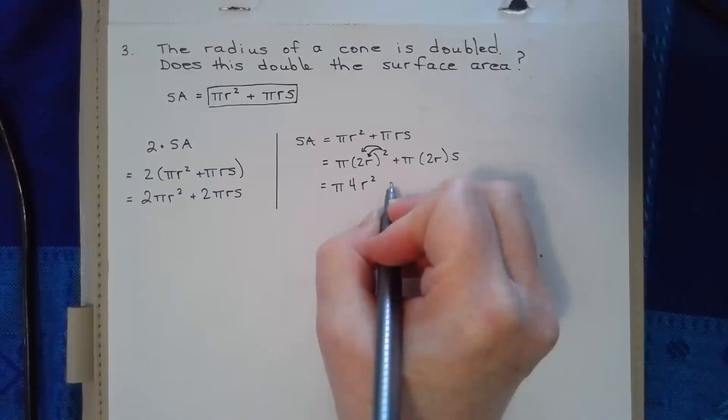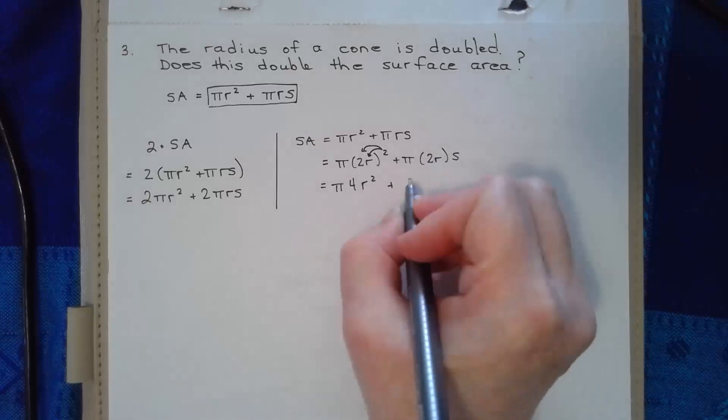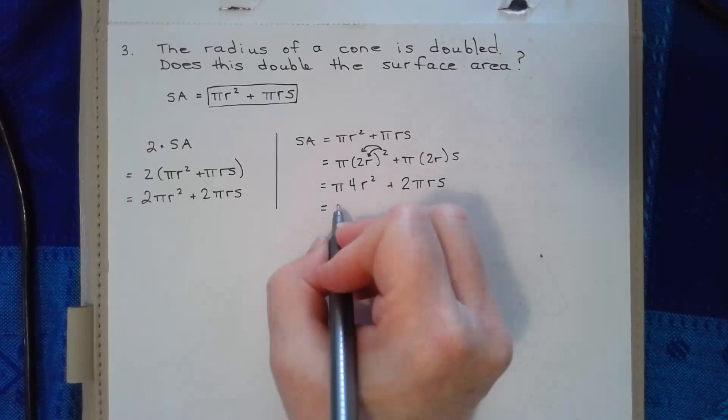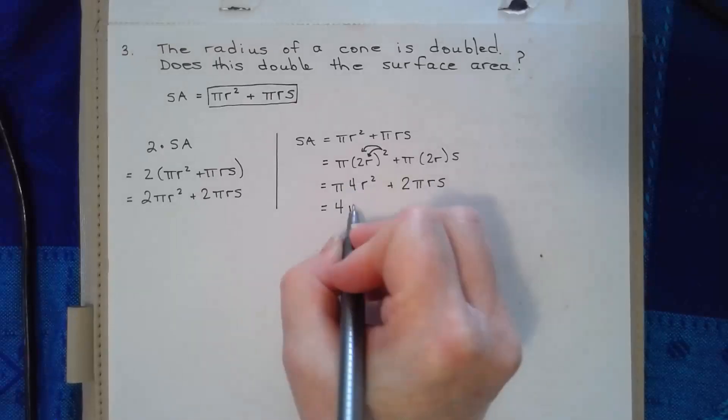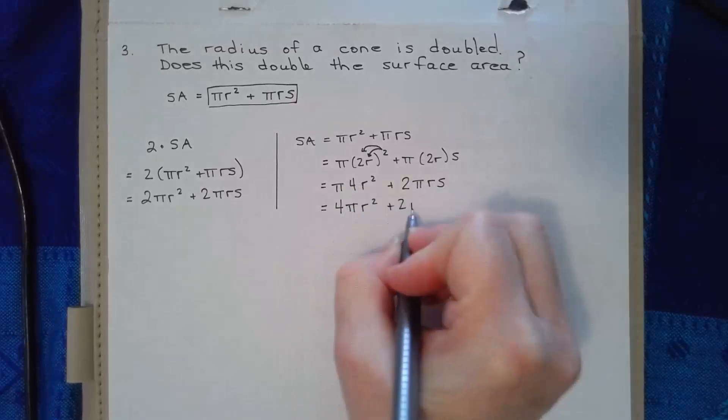And then here, all of these things are just multiplied together. So there's pi times two times r times s. So I typically write the number first. So two pi r s. And if I simplify this a little bit more, I typically write the number first: four times pi times r squared, plus two times pi times r s.